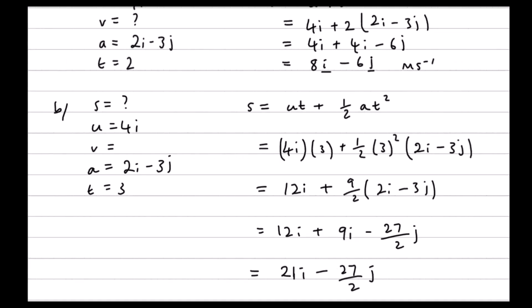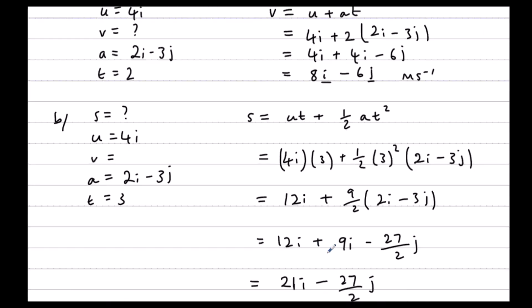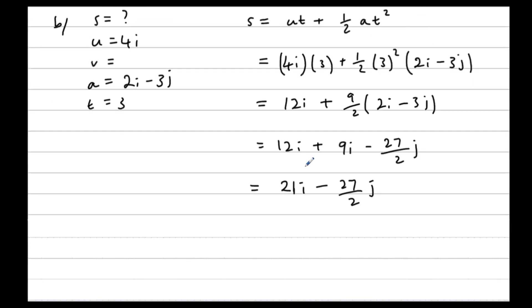So that's the displacement. We need to know the position vector though. So it started off at i plus j. So this is how far it's moved from i plus j.